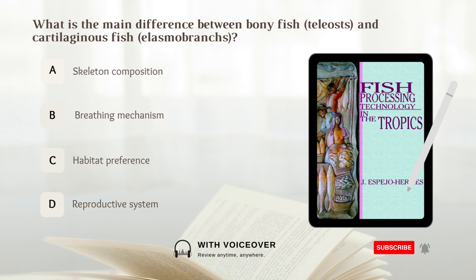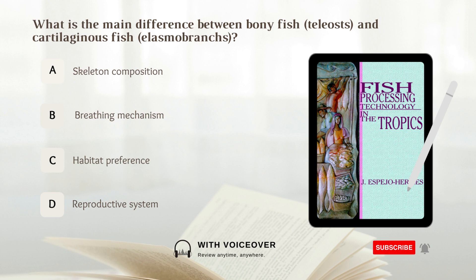What is the main difference between bony fish and cartilaginous fish? A. Skeleton composition. B. Breathing mechanism. C. Habitat preference. D. Reproductive system. Answer: A. Skeleton composition is the main difference between bony fish and cartilaginous fish.